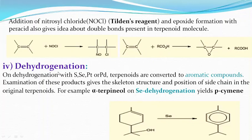Next is dehydrogenation. On dehydrogenation with sulfur, selenium, platinum, or palladium, terpenoids are converted into aromatic compounds — for example, alpha-terpineol. Selenium dehydrogenation yields p-cymene, which gives the skeletal structure and position of side chains in the terpenoids.